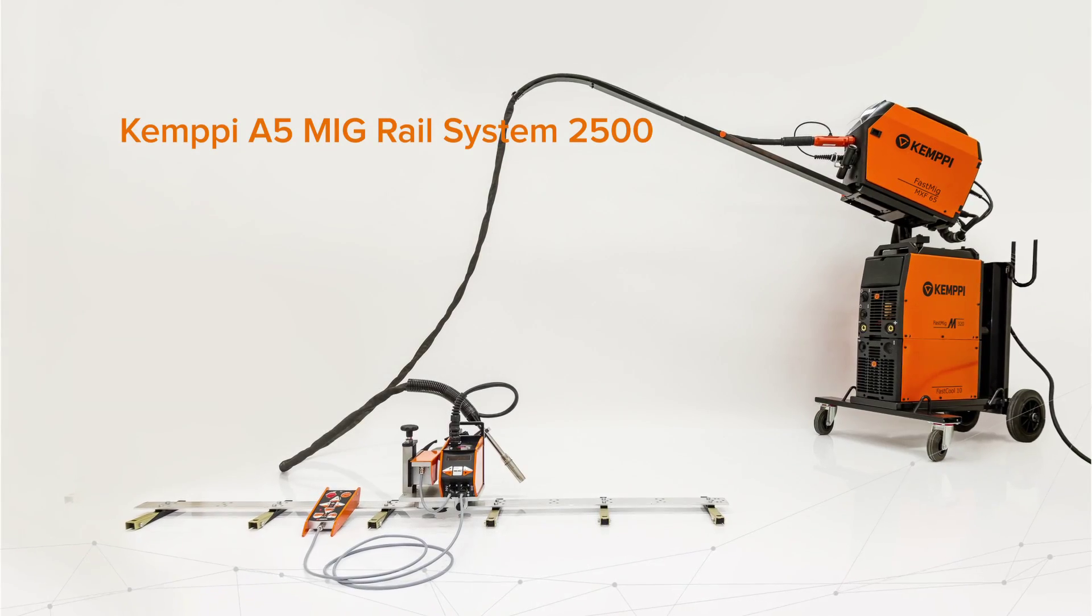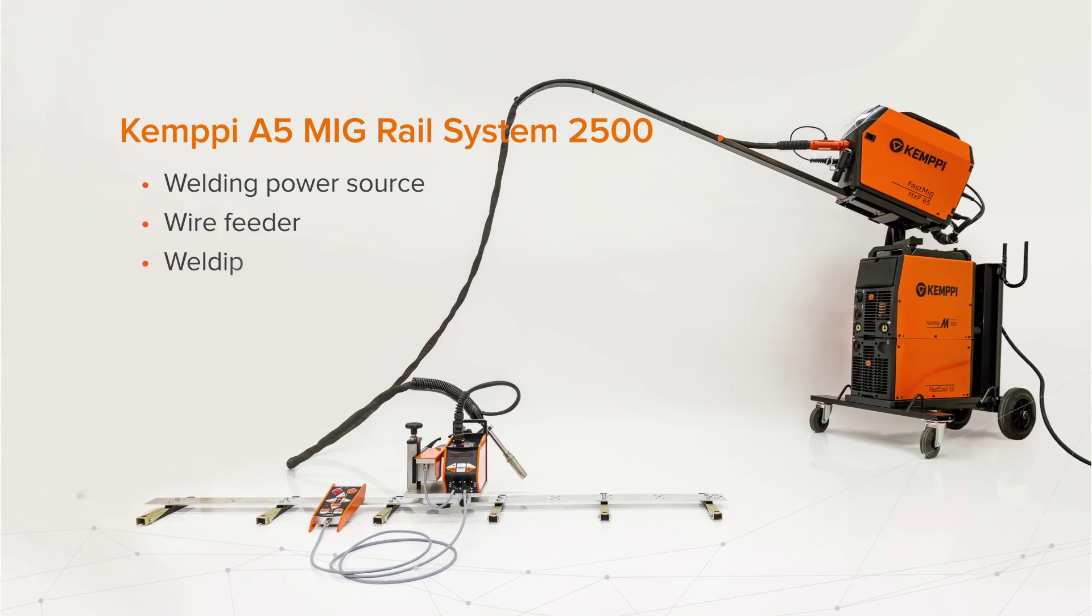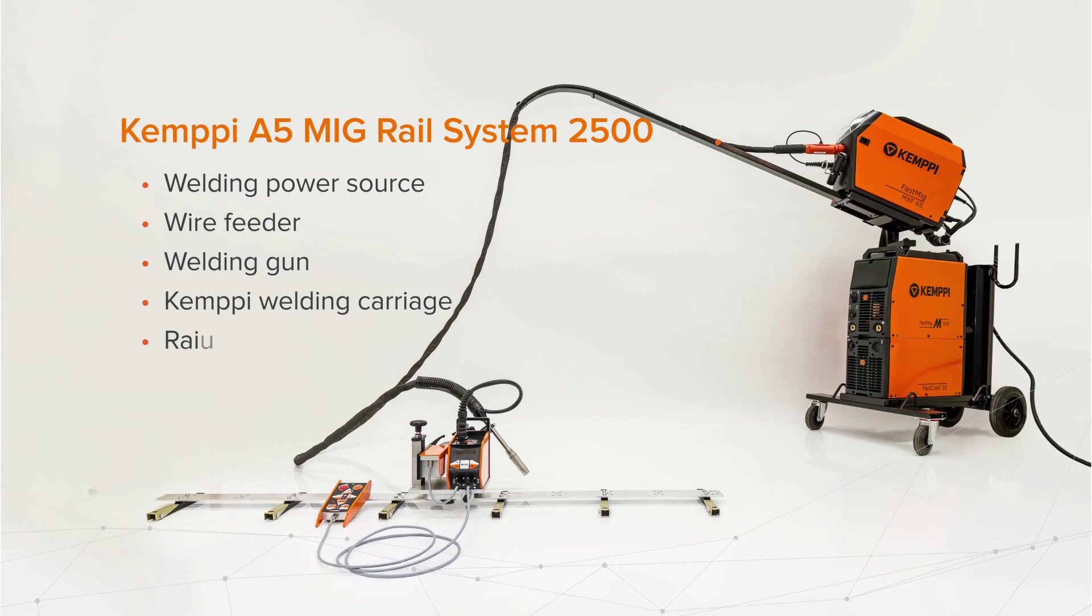The system consists of Kempi welding equipment, the Kempi welding carriage, and rails for the carriage.